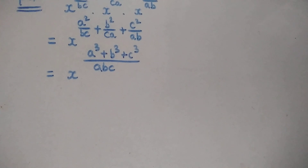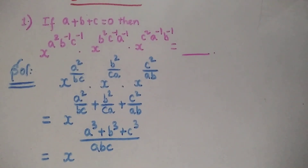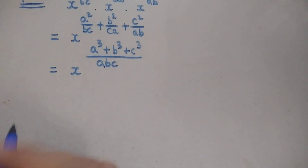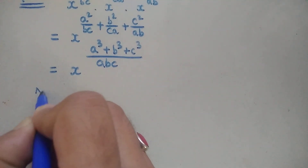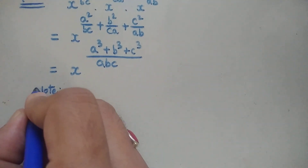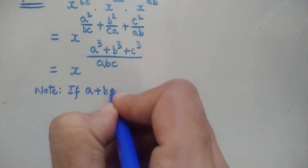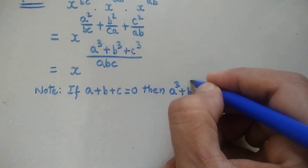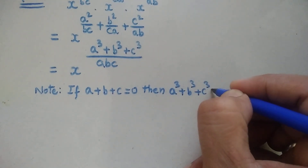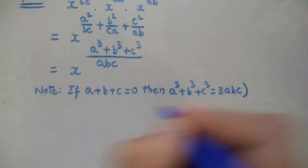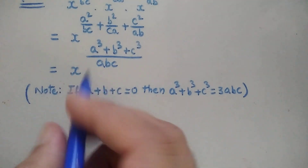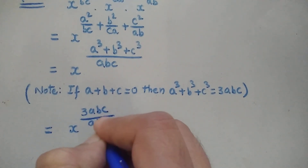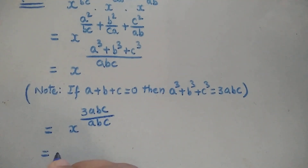We have been given that a plus b plus c equals 0. If a plus b plus c equals 0, then a³ + b³ + c³ = 3abc. So we can write this as x^(3abc/abc), which equals x³.